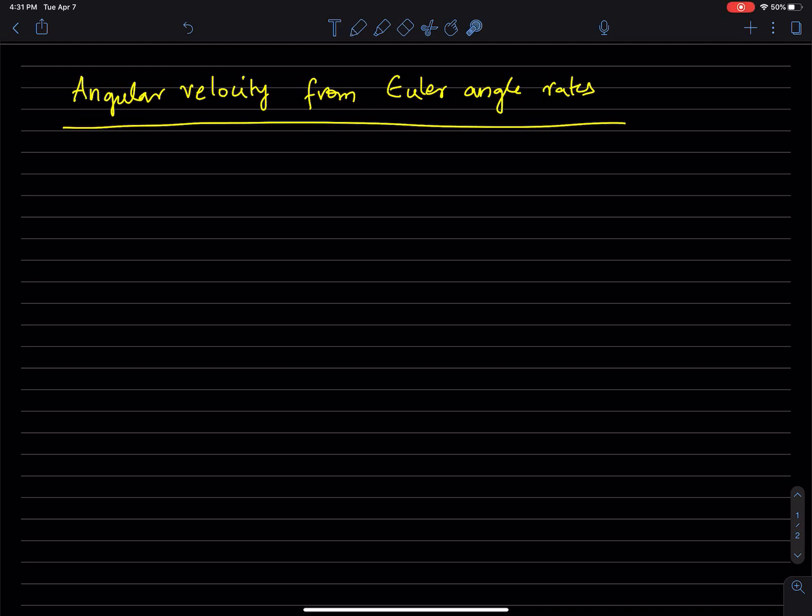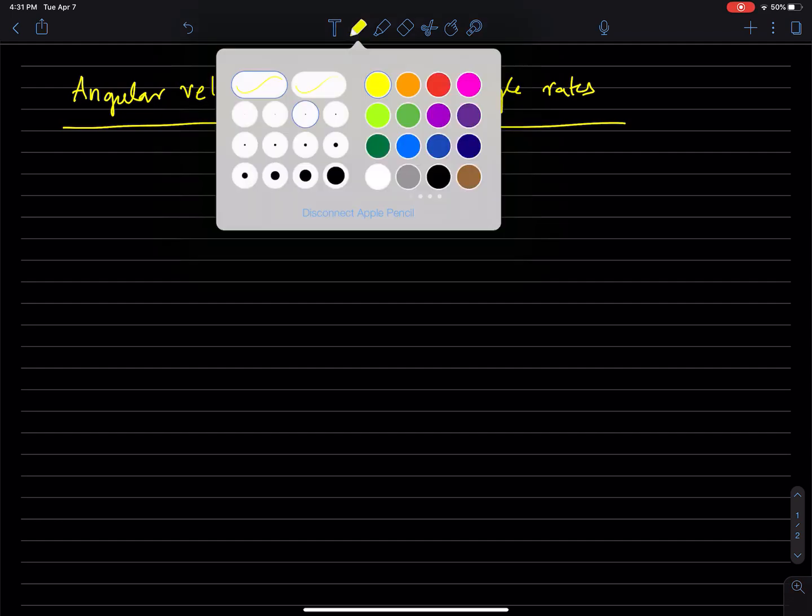In this video, we're going to talk about deriving an expression for the angular velocity of a frame whose rotational orientation has been described by Euler angles. And you know something about the rates of change of those Euler angles. How do you write an expression for the angular velocity? That's what we're going to do.